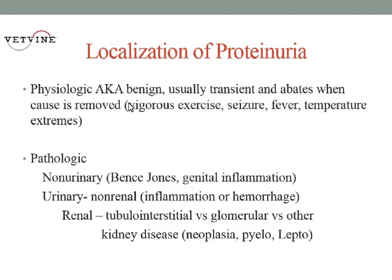This can happen with exercise, a seizure, fever, temperature extremes, heat stroke, as well as hypothermia. And just being a septic patient — a lot of animals that come in, and we do a urinalysis as part of their routine screening, especially for sick patients, and we see that 2 or 3 plus proteinuria, and we don't know if this is transient or if it's going to be pathologic. So that's one that we typically want to follow up on a few weeks after the illness to see if there is evidence of kidney disease present.